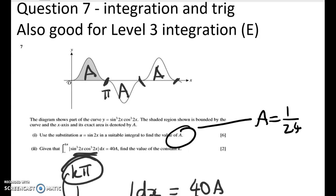Well, we know that one of them goes from 0 to pi on 4. So by the time we get to 1 pi, we've got four of them. So to get to 40a, we're going to have 40 lots of pi on 4, which is 10 pi.